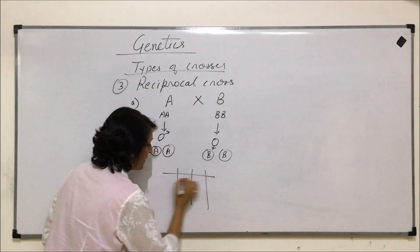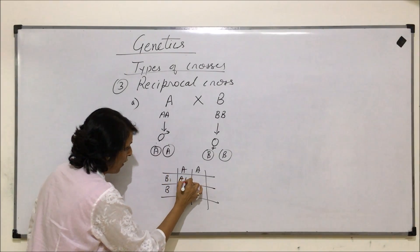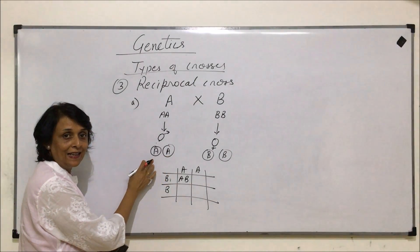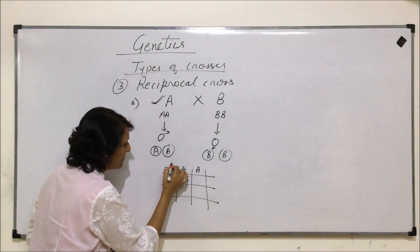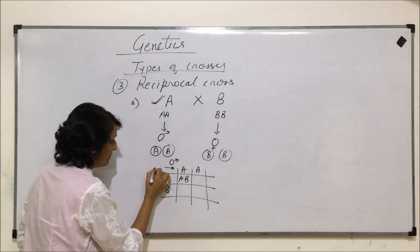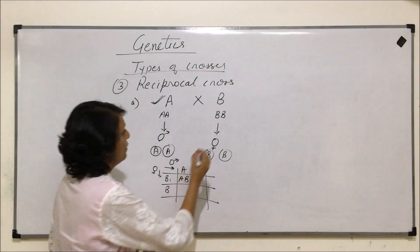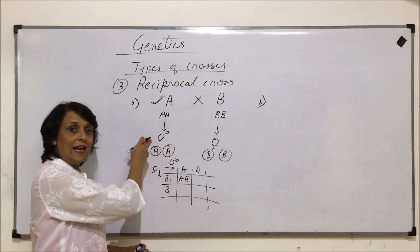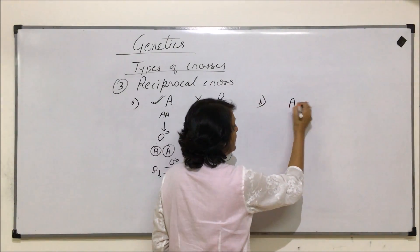The gamete from A will have allele A, and the gamete from B will have allele B. If we make the Punnett square, it's going to be A and A here and B and B here, and the offspring will have AB. What we have to remember is that the A allele came from plant A as the male gamete, and the female gamete was taken from plant B. In the reciprocal cross, we switch — the female gamete will now be taken from A.